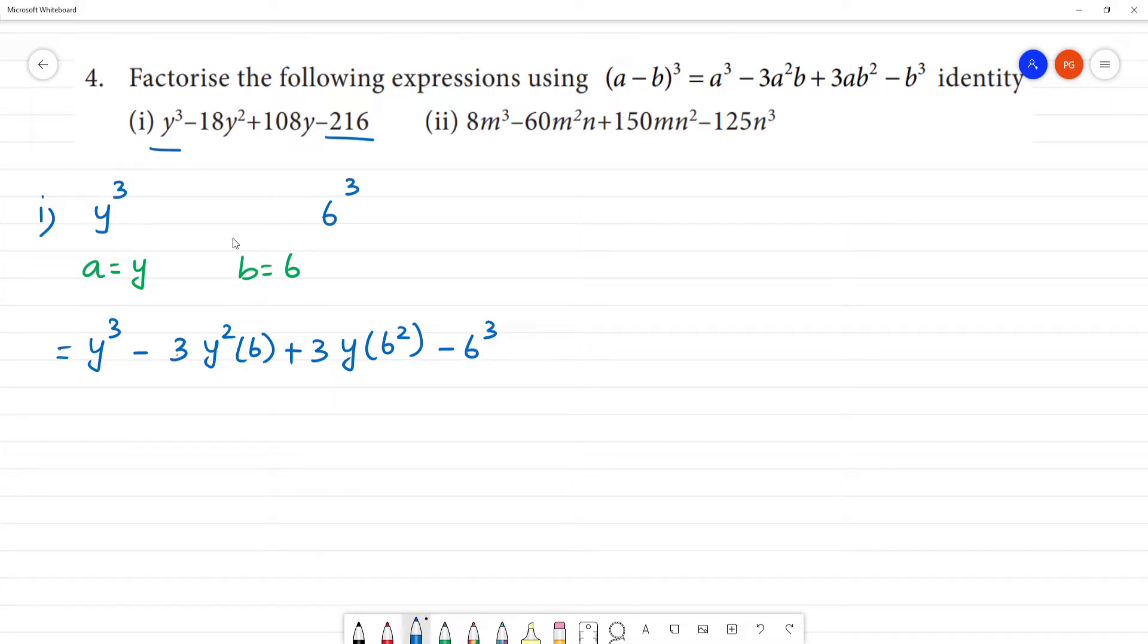Now 6 into 3 is 18, so 18y square. 6 square is 36, 36 multiplied by 3 is 108, so 108y. This is 6 cube which equals 216.